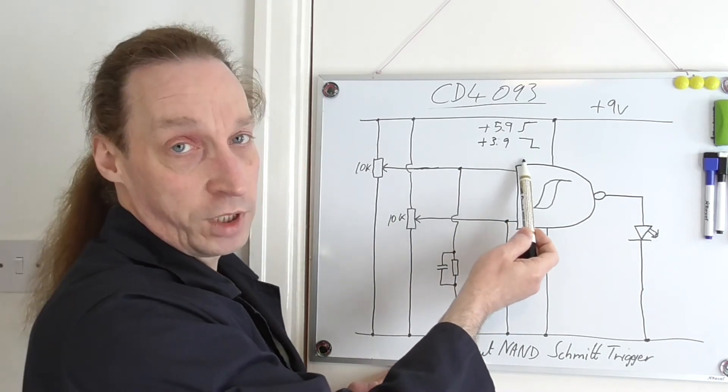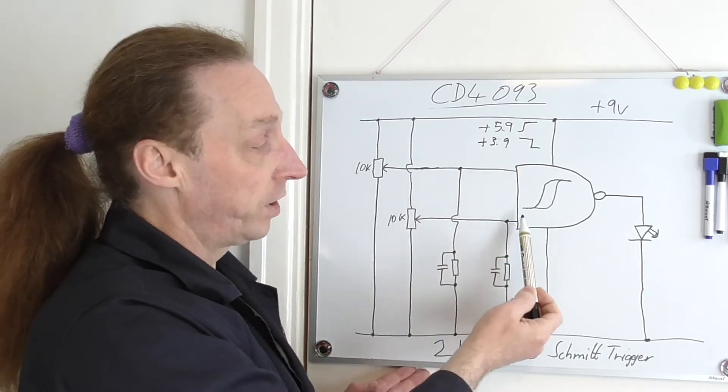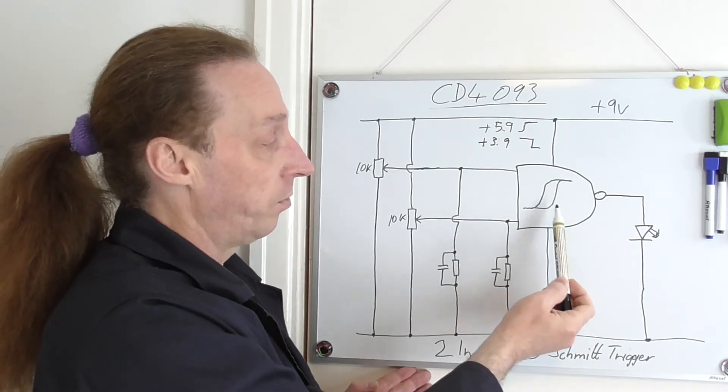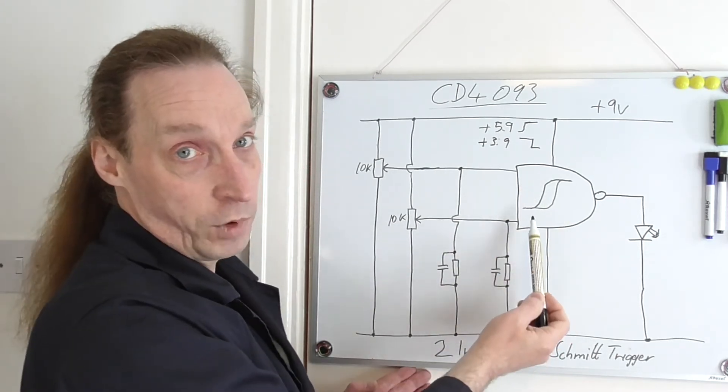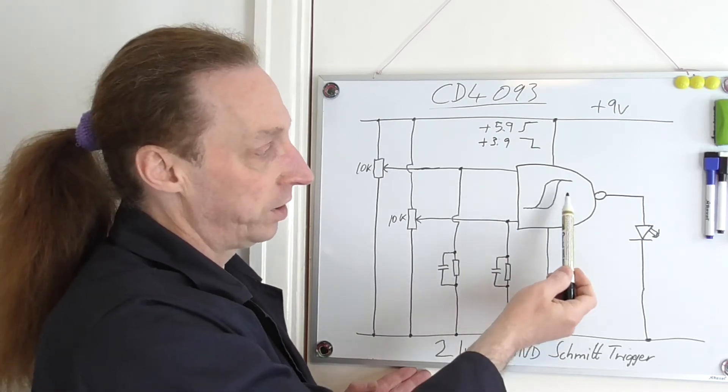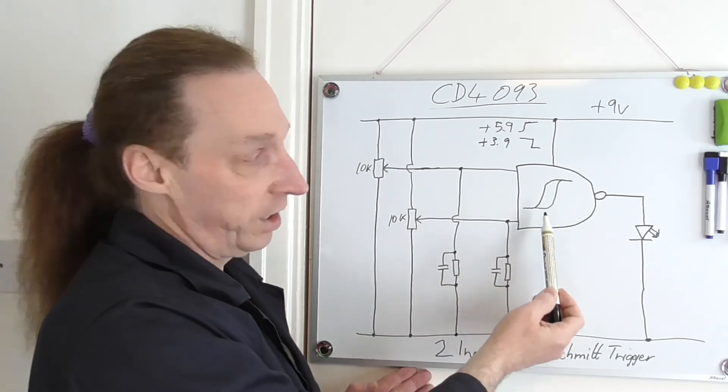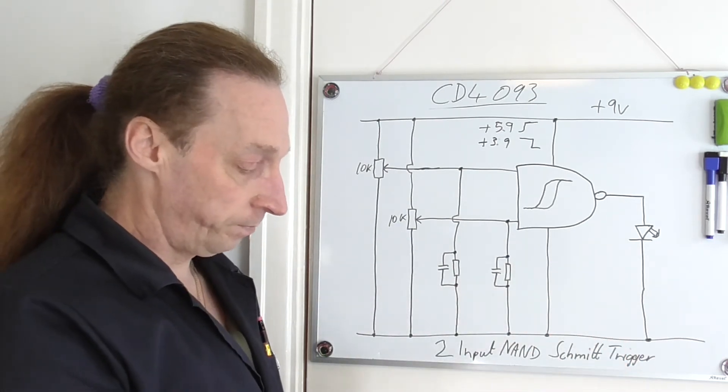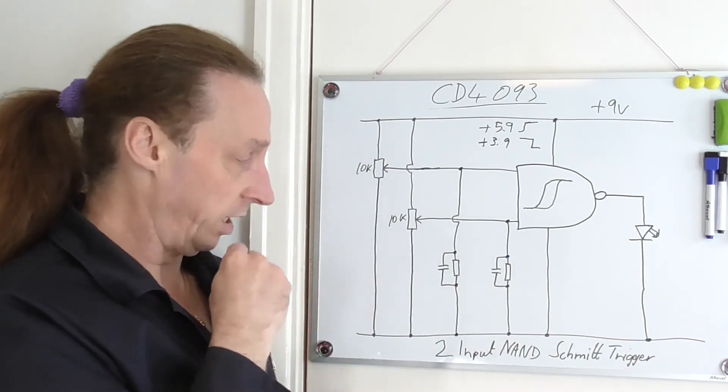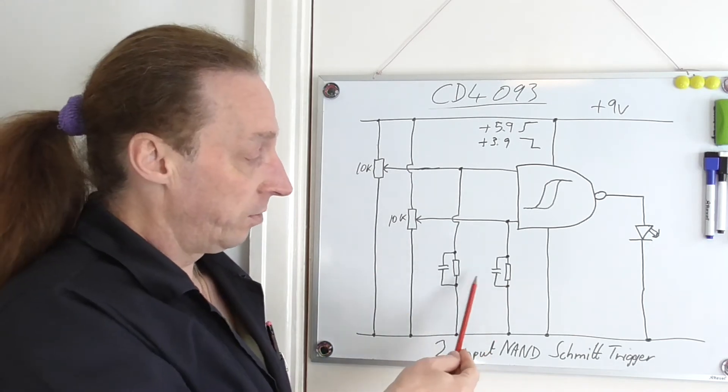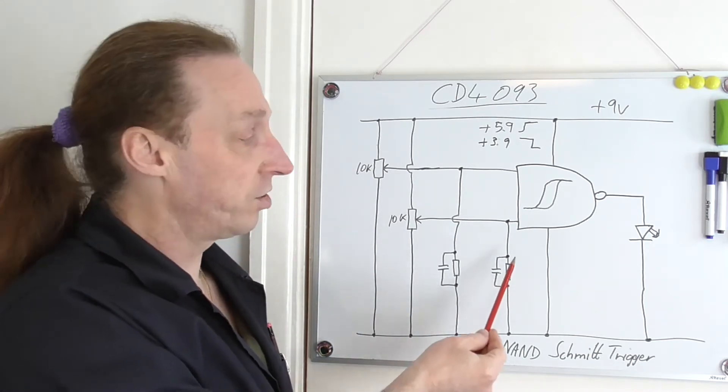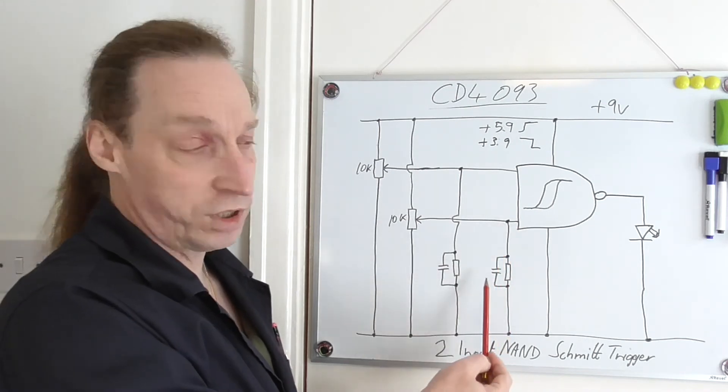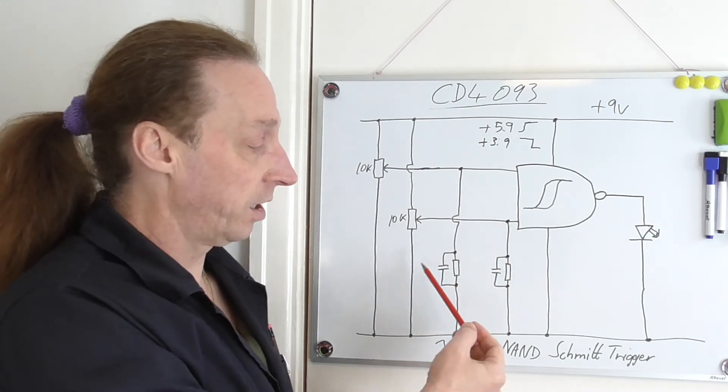But either one of these inputs now has to drop below about 3.9 volts before it detects that as being a low voltage. And then when one or the other or both fall below that voltage, that will then go high again.